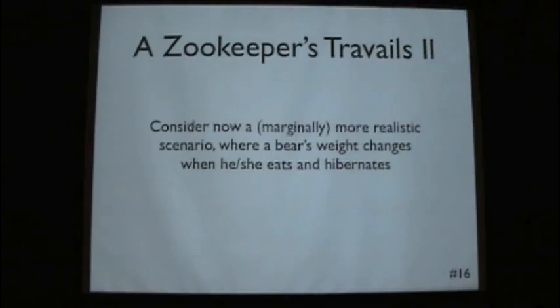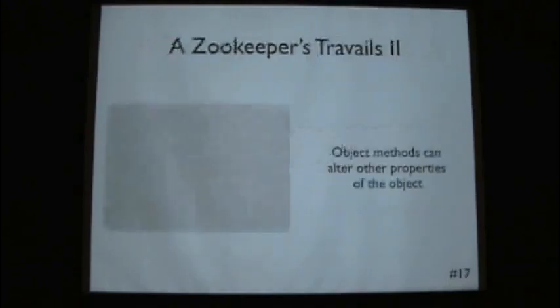Okay, so here's a marginally more realistic scenario. Now a bear's weight can change when he or she eats and hibernates. So we need to have some methods inside of our class of eating and hibernating. And those will modify the attribute's weight. Okay, so this is just to show that object methods can alter other properties of the object. So this is an important point. Again, we have our class bear. We initialize it with name and weight. And now we have, we define eat. Again, we need to pass itself. And now an amount that we've eaten.